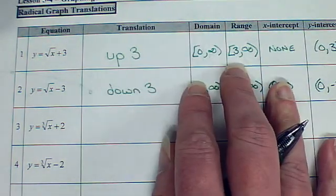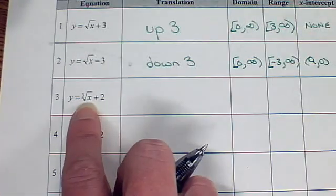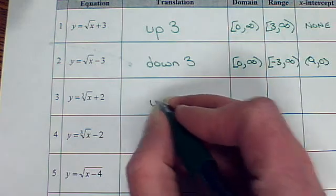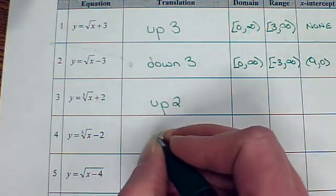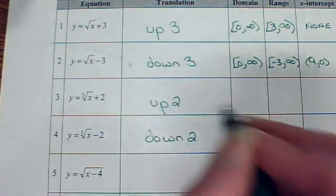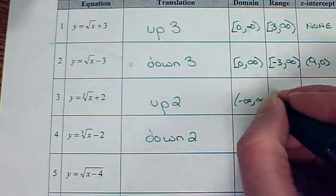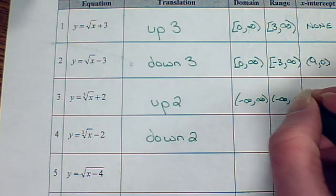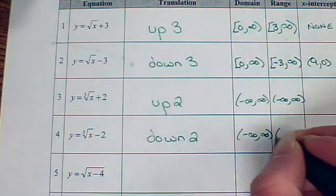Now, I'm kind of walking you through this, but I think you can find those on your own. 1, cube root of x plus 2 moves it up to cube root of x minus 2 would go down 2. Now, the beautiful thing about the domain and range of your cubic functions is that it's always all real numbers. Always all real numbers.